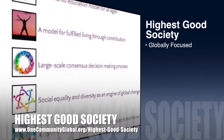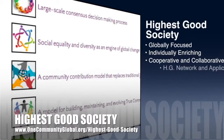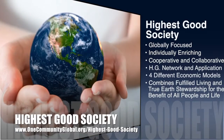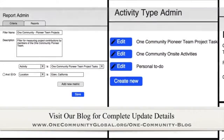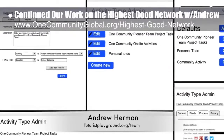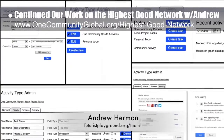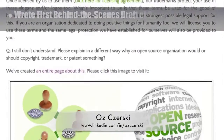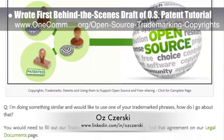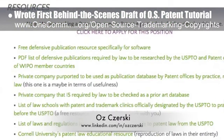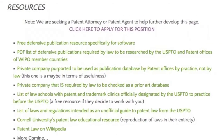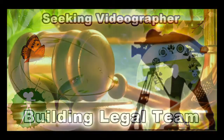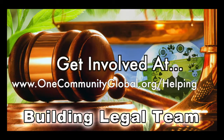The One Community approach to highest good society is globally focused, individually enriching, cooperative and collaborative. It includes a highest good network and application, four different economic models, and combines fulfilled living and true earth stewardship for the benefit of all people and all life on this planet. This last week the core team continued our work on the highest good network with Andrew Herman, software engineer and core member of Futurist Playground. Here's a collage showing the mock-ups Andrew has created for what the application will look like and how the different functions and fields may be accessed and edited. Working with Oz Chersky, lawyer specializing in trademark and copyright law, we also filed trademarking paperwork for the highest good network and our logo. We also added additional FAQs to the copyrights and trademarks pages and a new resource section to the open source tutorial about patents. In this area of the project, we're seeking graphic designers, web designers, technology specialists, and videographers, and are building a highest good legal team.